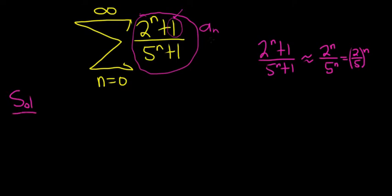So for limit comparison we pick our a sub n, which is whatever is in the series. So a sub n will be 2 to the n plus 1 over 5 to the n plus 1. And our b sub n, well we already picked it, right? We're going to compare it to this.